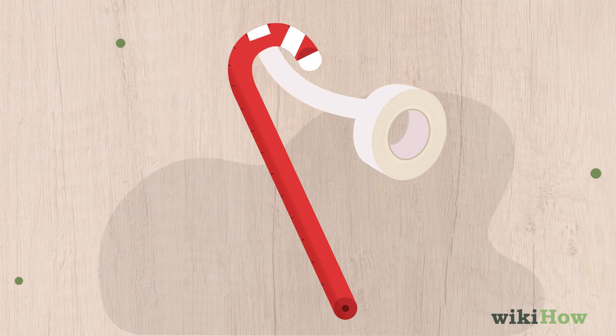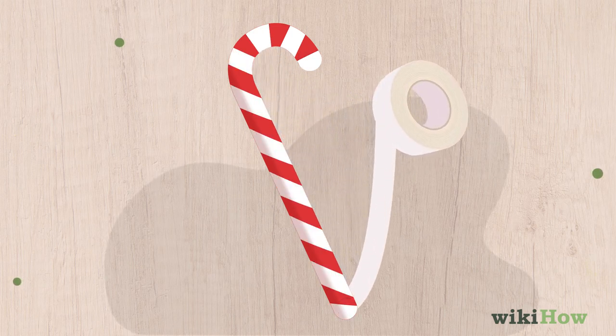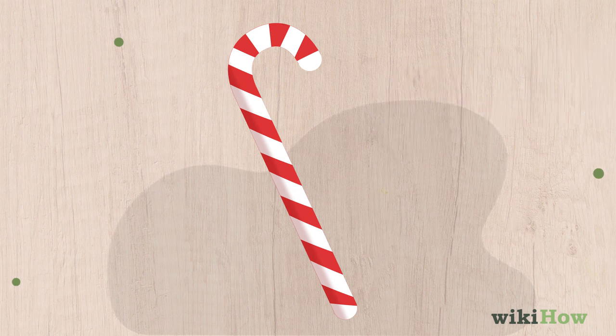Finally, wind the white electrical tape diagonally around the candy cane to make the stripes, using the pencil marks as a guide.